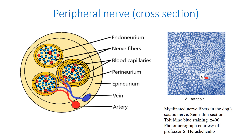Peripheral nerves or nerve trunks are built of myelinated and non-myelinated nerve fibers and three sheaths — the endoneurium, the perineurium, and the epineurium. The endoneurium surrounds each individual nerve fiber. It consists of loose connective tissue possessing occasional macrophages, mast cells, fibroblasts, and collagen fibrils.